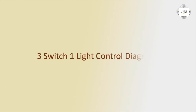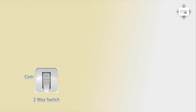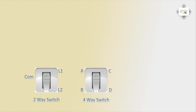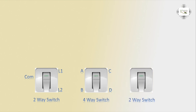Hello viewers, today I discuss the 3-switch 1-light control diagram, meaning 3 switches control 1 light. First, the 2-way switch: it has a common, line 1, and line 2. The 4-way switch has terminals a, b, c, and d. The 2-way switch terminals are the same as previously described.